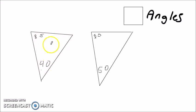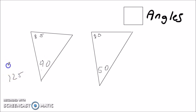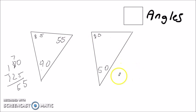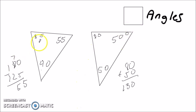For our second example, I will be proving that these two triangles are similar. Let's start off by finding the two missing angles. So 85 plus 40 is 125, and 180 minus 125 is 55. And this angle right here is 50. So as you can see, all three corresponding angles are congruent, which means that these two triangles are similar.